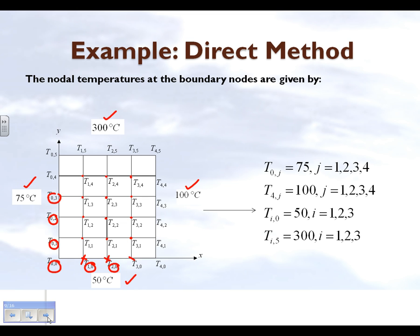The temperature at the top edge is 50 degrees Celsius, at the right edge is 100 degrees Celsius, at the bottom edge is 300 degrees Celsius, and at the left edge is 75 degrees Celsius. The corner edge nodes are left out, and we don't need the temperature at those since they don't play a role. Luckily, we don't have to make a decision about the corner node temperatures for this type of problem.